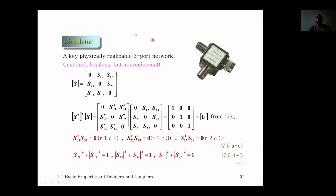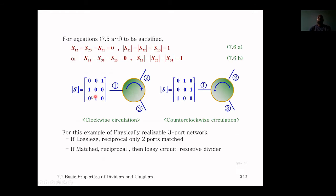This gives us a device called a circulator. This is an image of an actual circulator. The S-parameters for the clockwise circulator show that from port one there is only output at port two, from port two only output at port three, and from port three only output at port one. Similarly for the counterclockwise circulator.